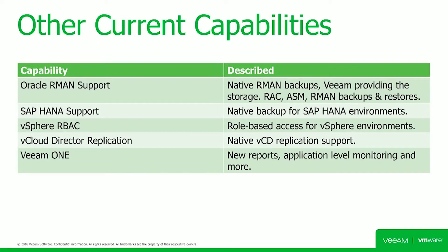Other Update 4 capabilities that were recently released include Oracle RMAN support, SAP HANA support, improved role-based access for vSphere environments, more integration with VMware Cloud Director, and more reporting in Veeam ONE. One thing I didn't mention earlier: many of you may be aware of grandfather-father-son retention policies that you can set up with backup copy jobs, and these backup copy jobs can target a scale-out backup repository with tiering enabled so that older or aged restore points can be tiered off. In a nutshell, that's what we've released in Update 4, and we've continued to work with Cloudian and PhoenixNAP, who are very big partners of ours.